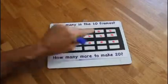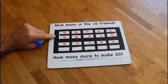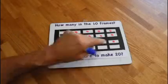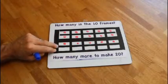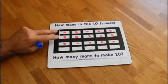How many in the 10 frames? Okay, here's our two 10 frames. First one's full. That's 10. Second one's not full. It has 1, 2, 3, 4, 5 in it. 10 and 5 more is 15. 15. One of our 10 numbers. 15 are in there.